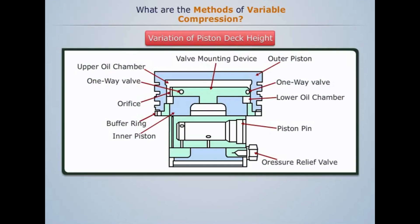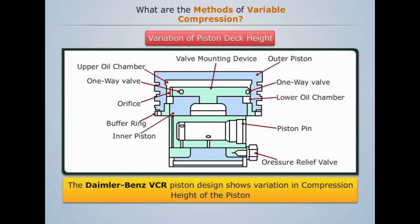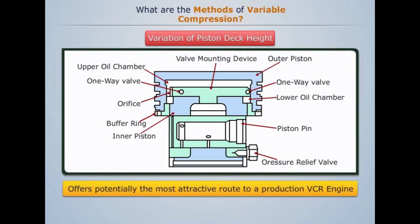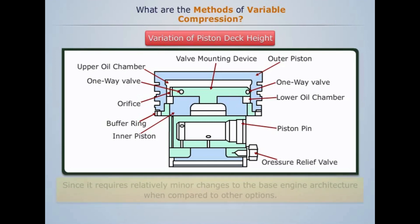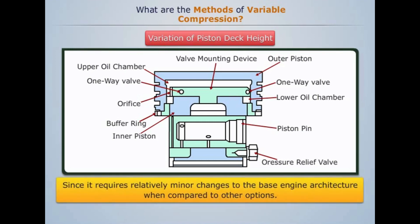Variation of piston deck height: The Daimler-Benz VCR piston design shows variation in compression height of the piston and offers potentially the most attractive route to a production VCR engine, since it requires relatively minor changes to the base engine architecture when compared to the other options.